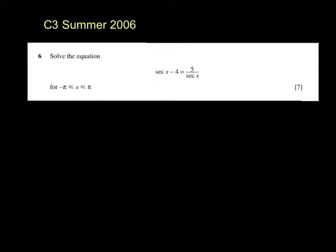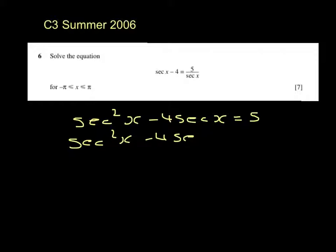C3 summer 2006, question 6. I'm going to solve this equation by multiplying by sec x. Sec squared x minus 4 sec x equals 5. Sec squared x minus 4 sec x minus 5 equals 0.